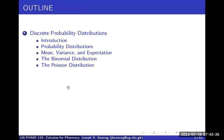We'll look at what a probability distribution is, and then later on we'll talk about the mean, variance, and expectation of a probability distribution — really mean, variance, and standard deviation, because in this case the expectation is the same as the mean. Then we'll look at two specific examples of discrete probability distributions: the binomial distribution and the Poisson distribution.